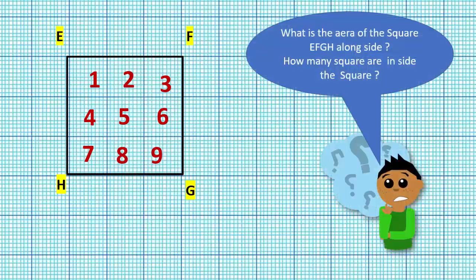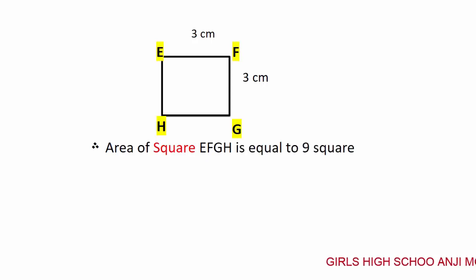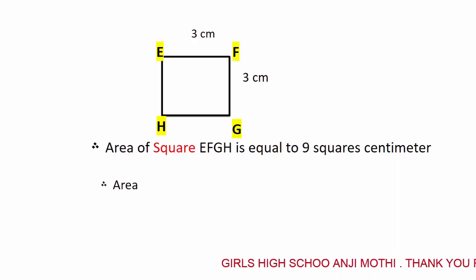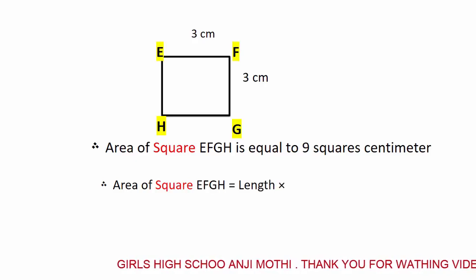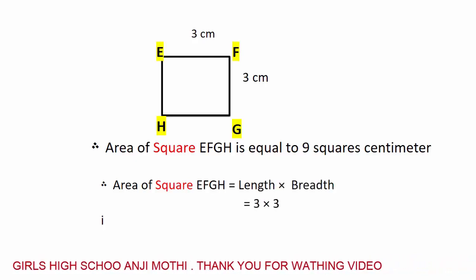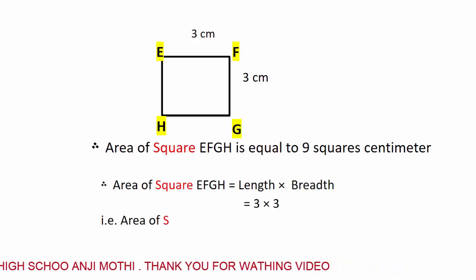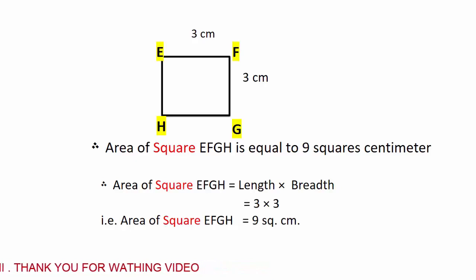There are nine squares inside the square EFGH. The square EFGH has a length of three centimeters. Area of square EFGH is equal to nine square centimeters. That is, area of square equals length multiplied by breadth — three multiplied by three — which equals nine square centimeters.